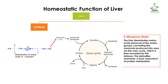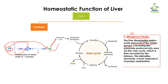The fourth synthesis function of the liver involves nitrogenous waste — compounds which contain nitrogen. The liver deaminates amino acids, meaning it removes the amino group from the amino acid. In the amino acid structure there is a carbon center with a carboxyl group and an amino group. In the process of deamination, this amino group is removed and converted into ammonia, which then enters the urea cycle and is excreted by the kidney.